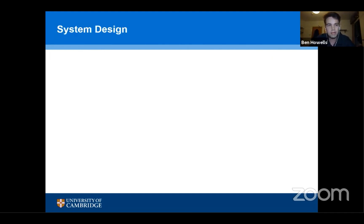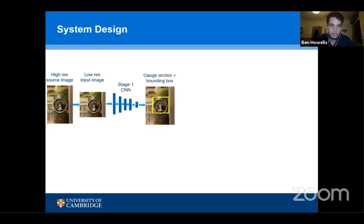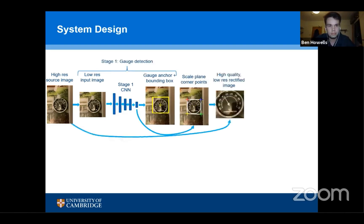We use deep learning as part of this pipeline. We began with a high-resolution source image, down-sampled to a 192×192 pixel input, and fed this into our first convolutional neural network. This gives us a bounding box for gauge detection and also perspective key points, which are used alongside our original high-res source image to produce a rectified image, accounting for perspective correction.